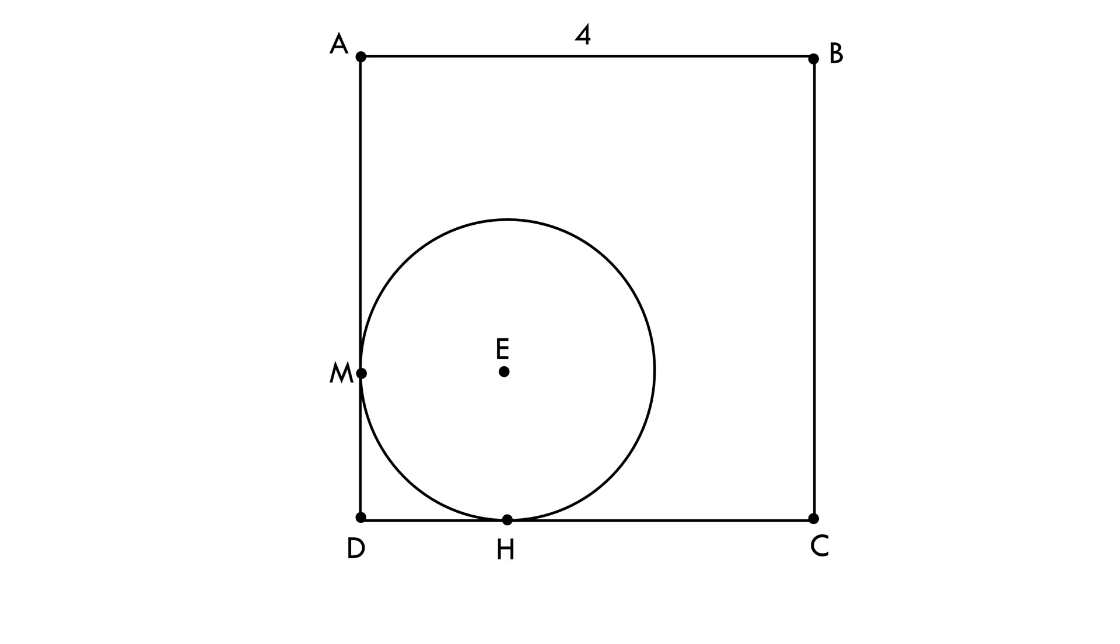A line BG is drawn such that it is tangent to the circle at point F. If the radius of the circle is one unit, find the area of the triangle BGC. You might like to pause the video to think of the solution. I'll lead you towards the answer.